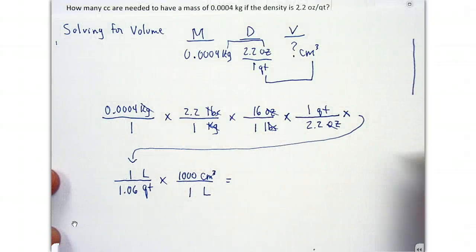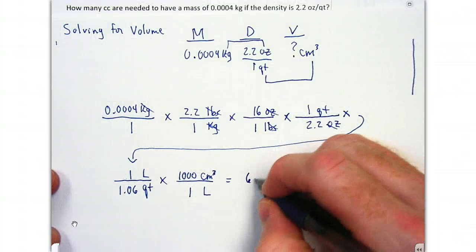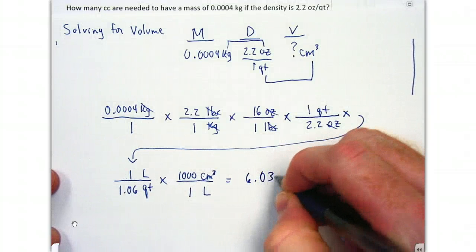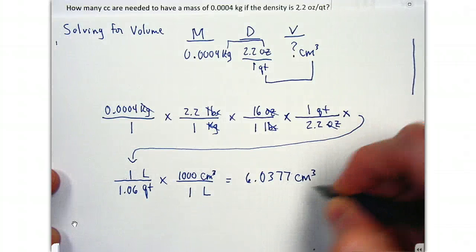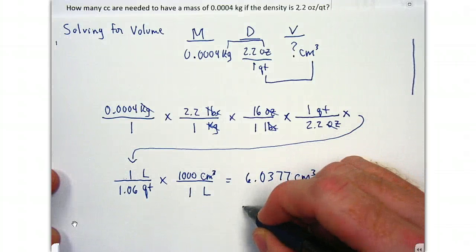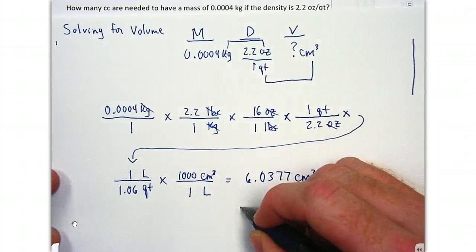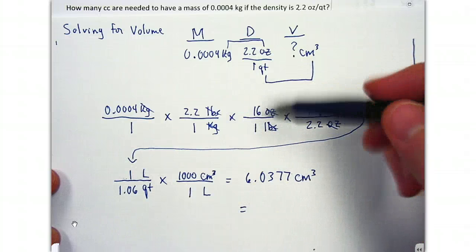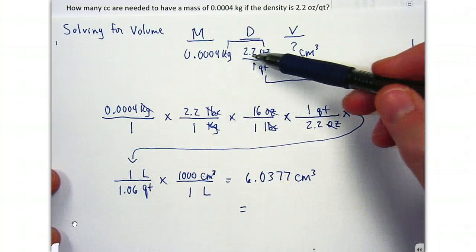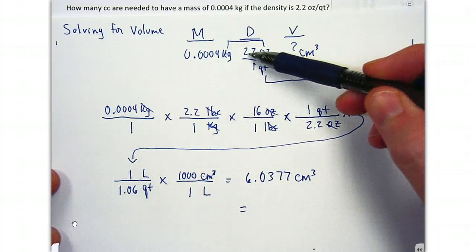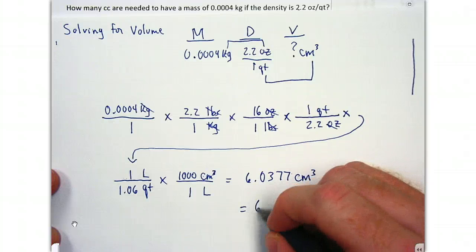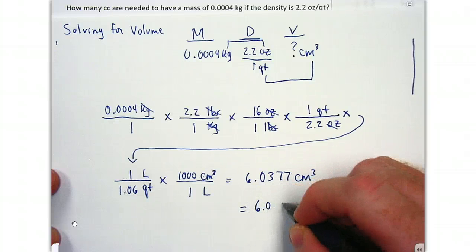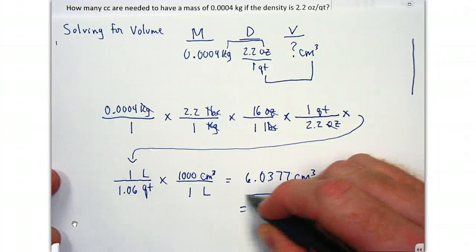We do our calculations and come up with 6.0377 cubic centimeters. Using significant figures for the problem — two significant figures — our answer is 6.0 centimeters cubed.